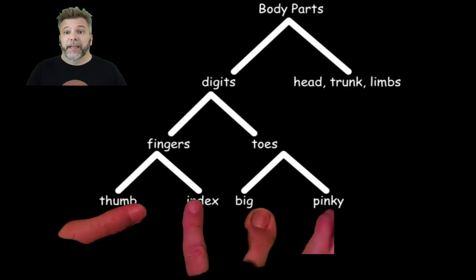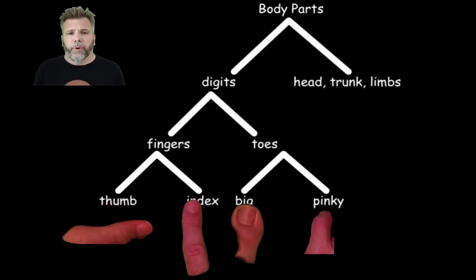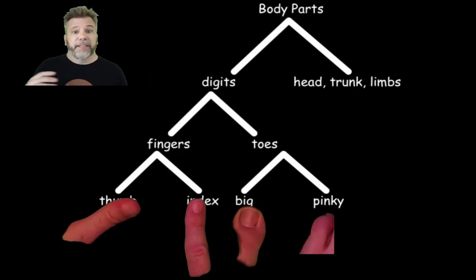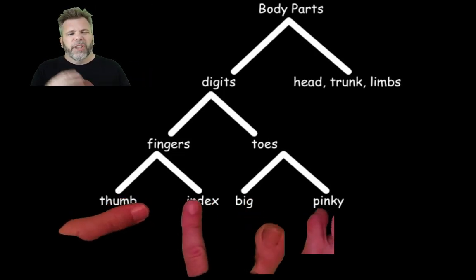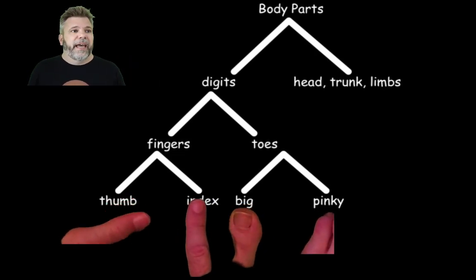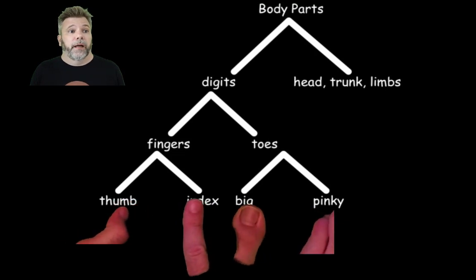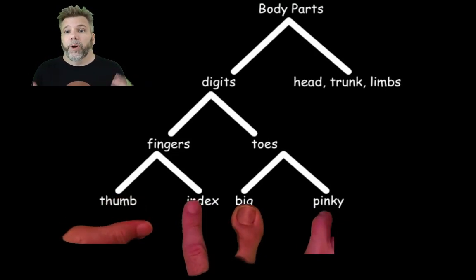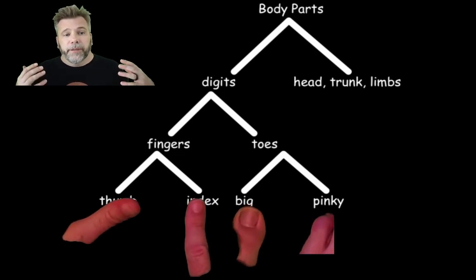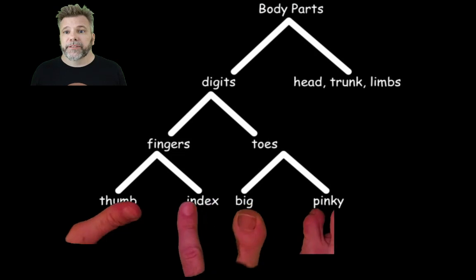Thinking this way is going to be really important as we consider coloration, morphology, and deceptive versus honest signals, because there are a lot of different terms and processes involved. We tend to confuse them and sometimes use those terms incorrectly. Hopefully this framework will give you something reasonable to anchor on as we go through these concepts.